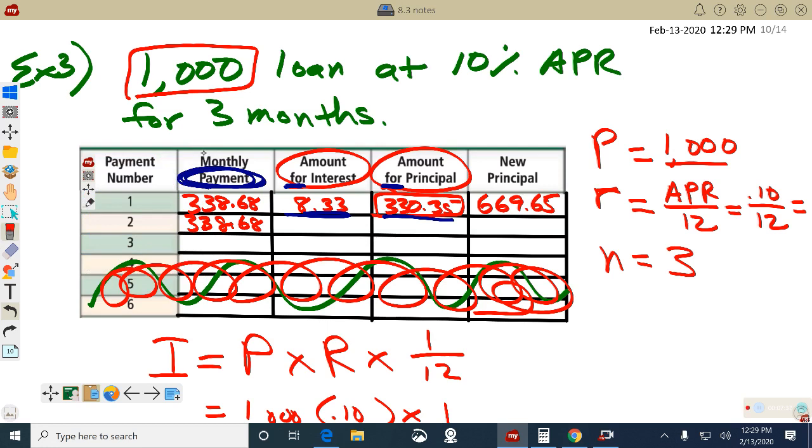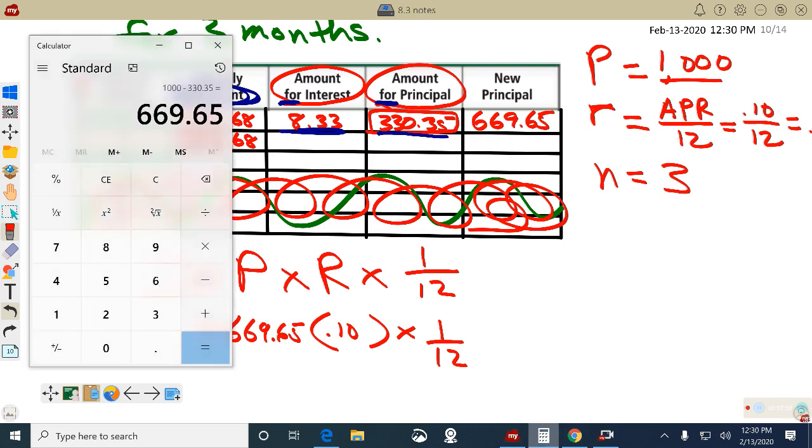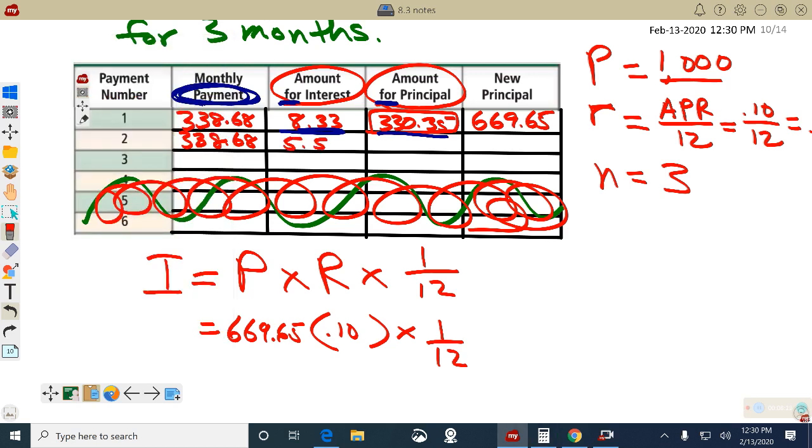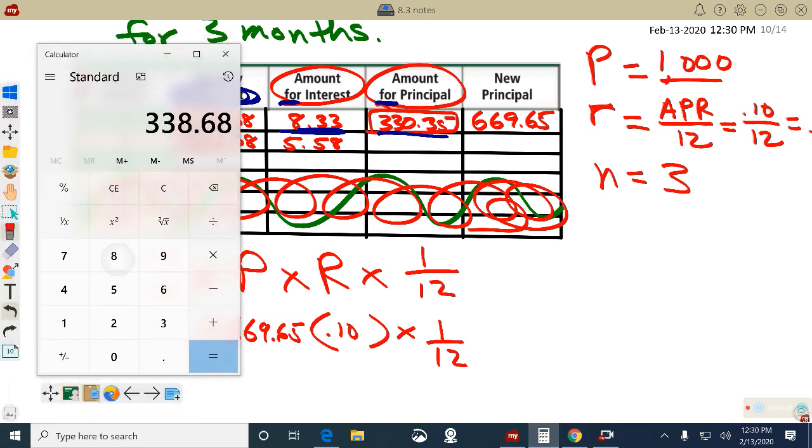Let's continue. Second month, same amount is paid, $338.68. Let's figure out how much the bank is going to keep again now. But now look what I'm going to do. Same formula. Right. Same formula, but the principal is no longer a grand. The person doesn't owe a grand anymore. The person owes $669.65. Let's see. $669.65 times, I'm talking please, thank you. Equals, I'll divide that puppy by 12 and round to the pennies. $5.58 goes to the bank. The bank keeps this of the payment.